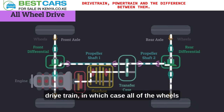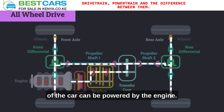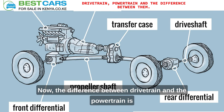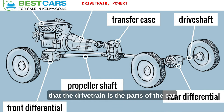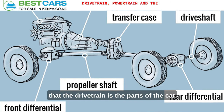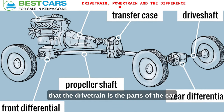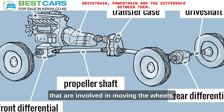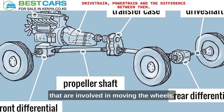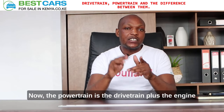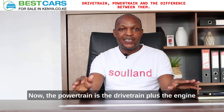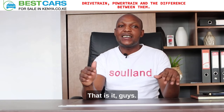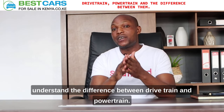Now the difference between drivetrain and powertrain is that the drivetrain refers to the parts of the car that are involved in moving the wheels. The powertrain is the drivetrain plus the engine. That is it, guys — from me to you. I hope you understand the difference between drivetrain and powertrain.